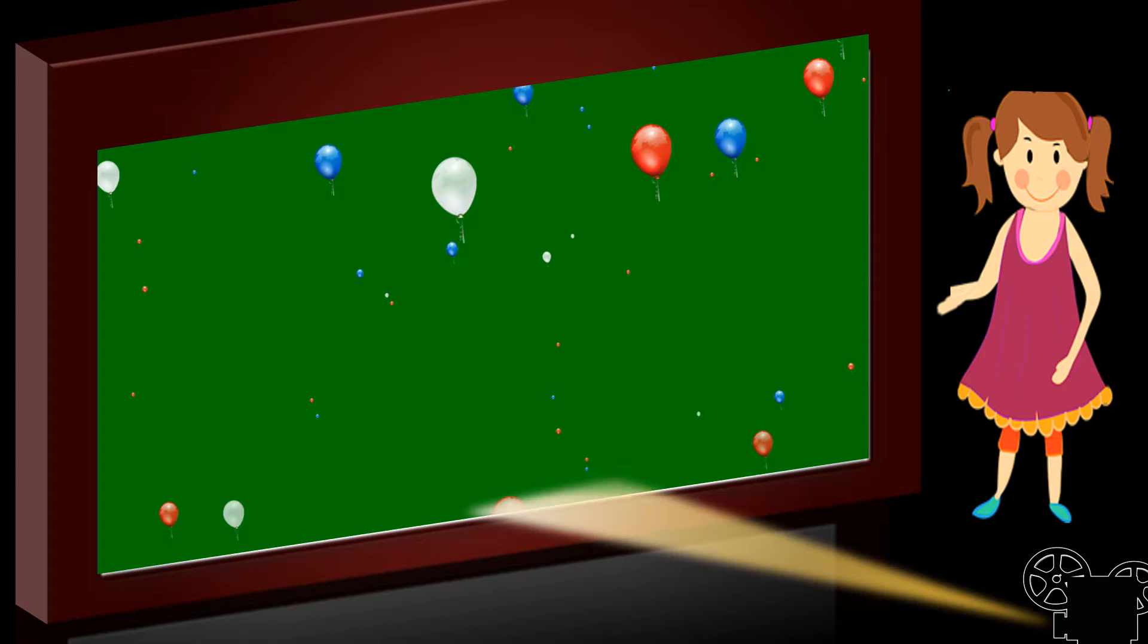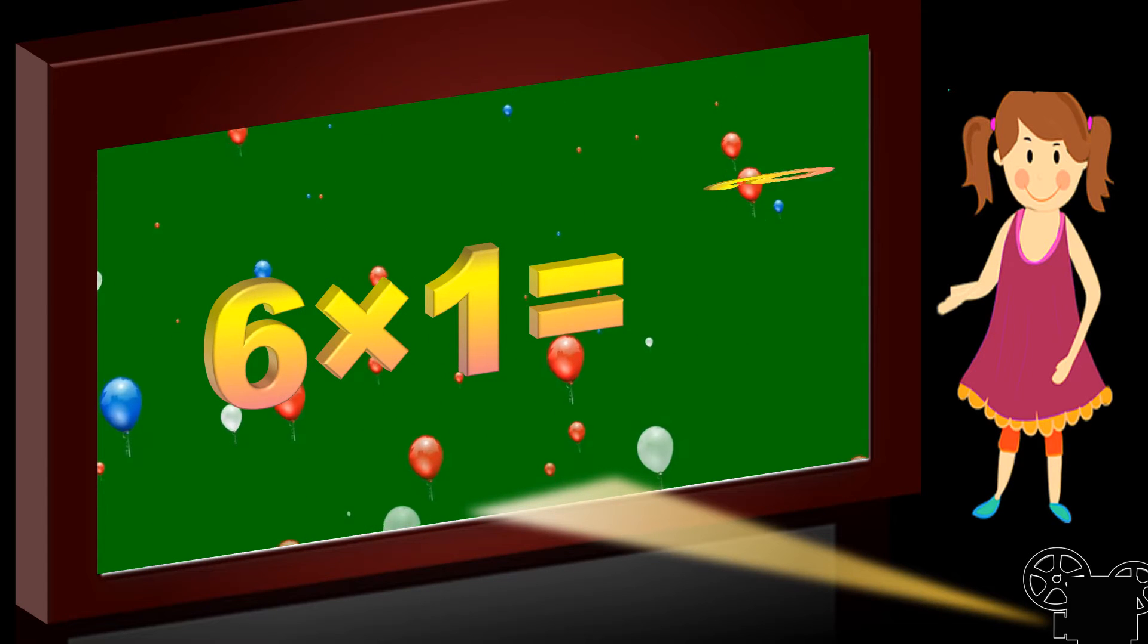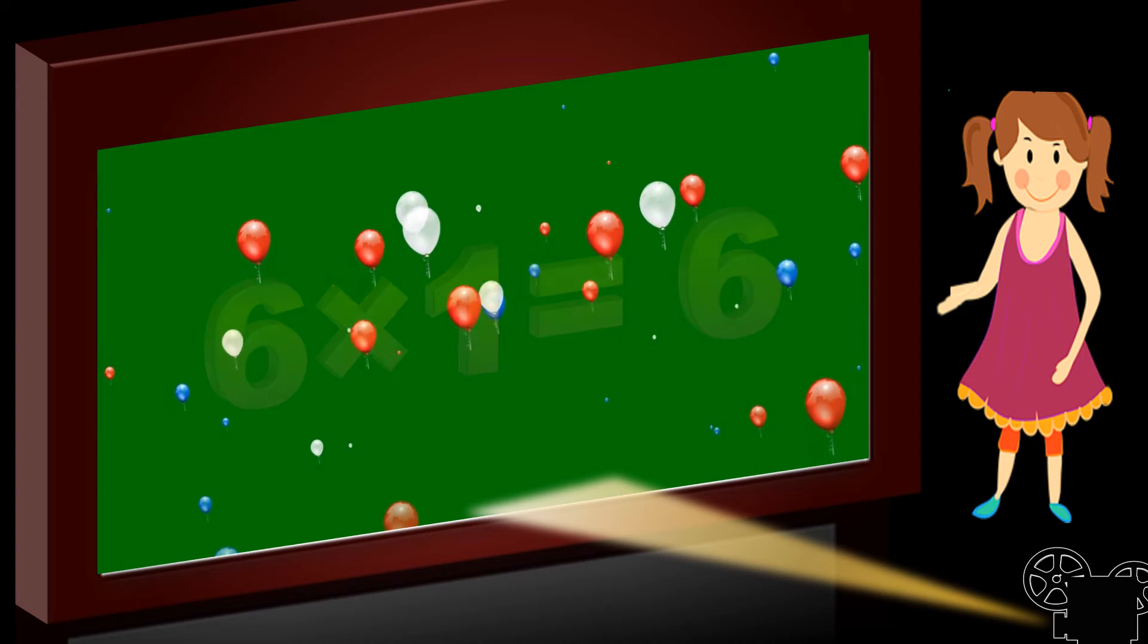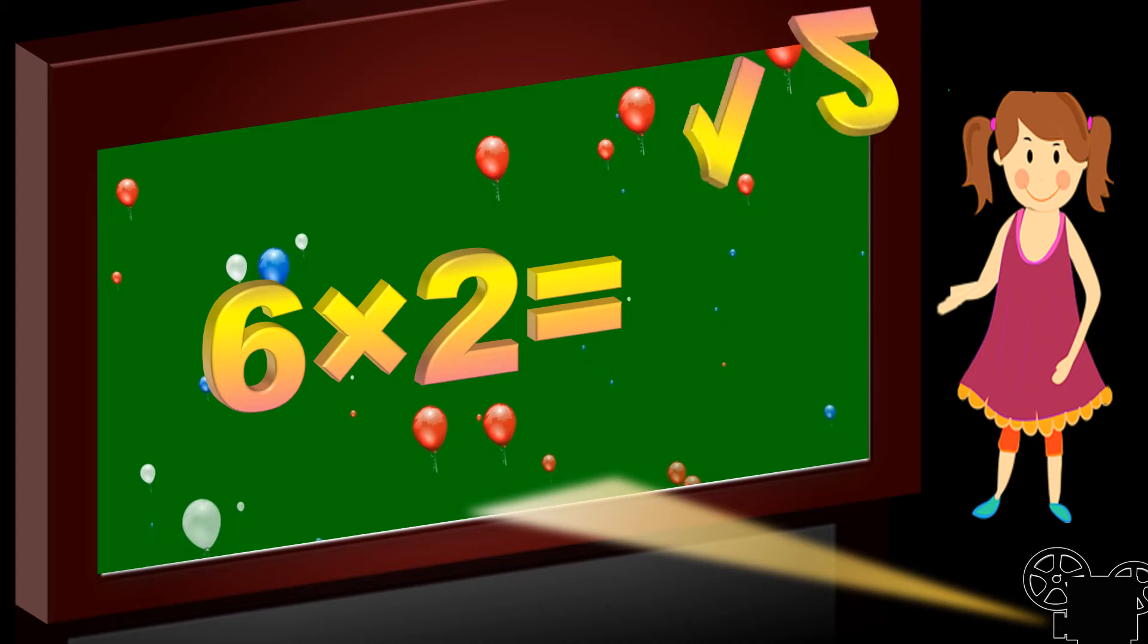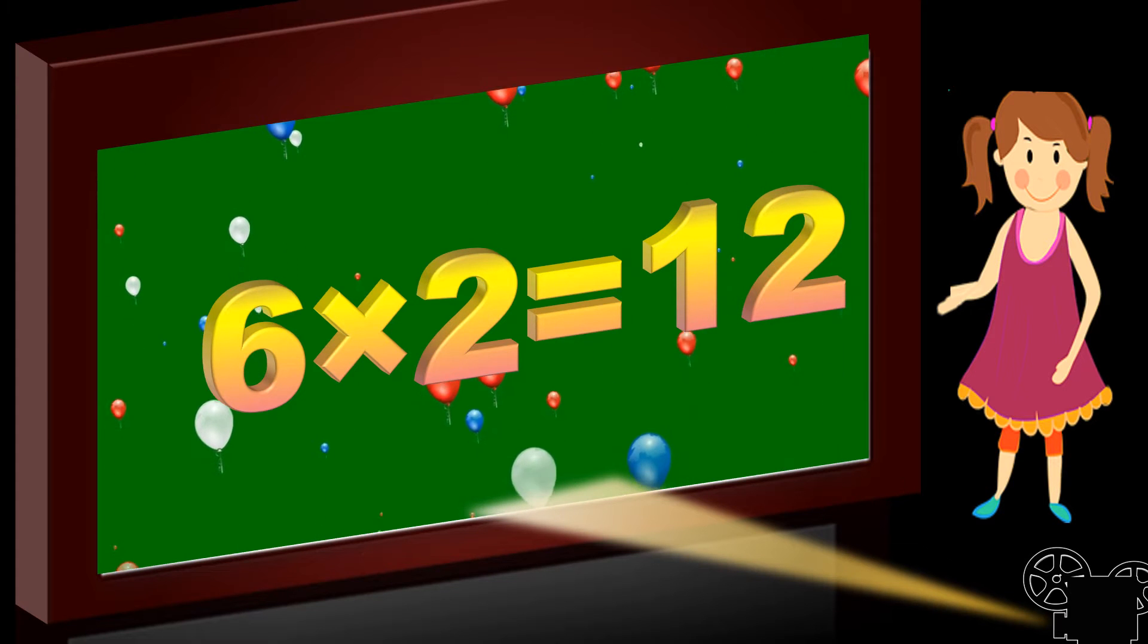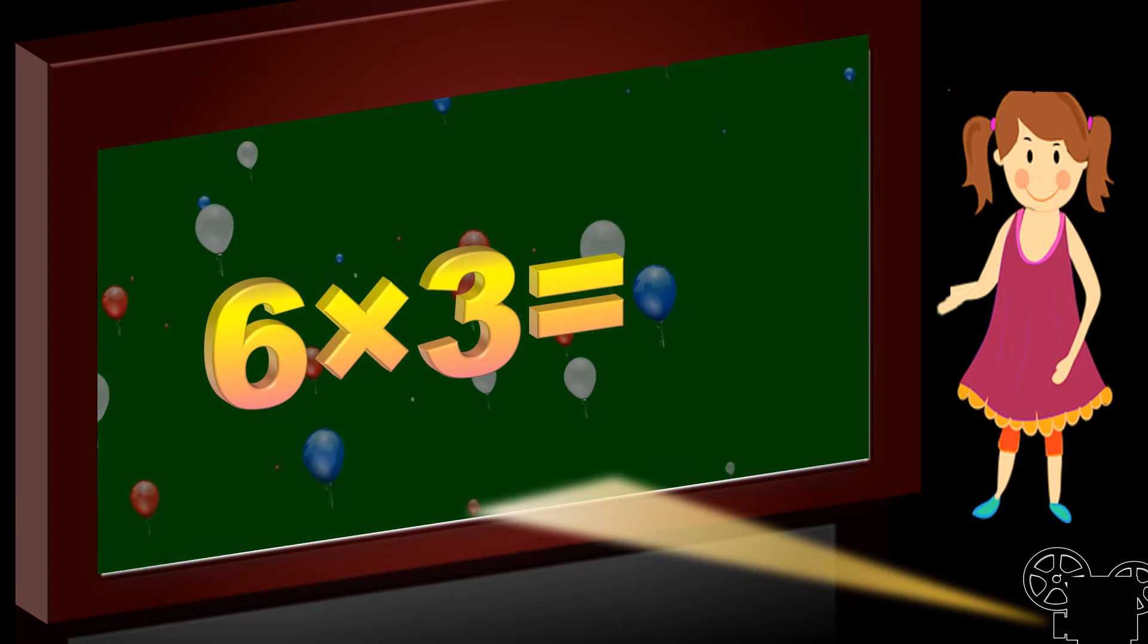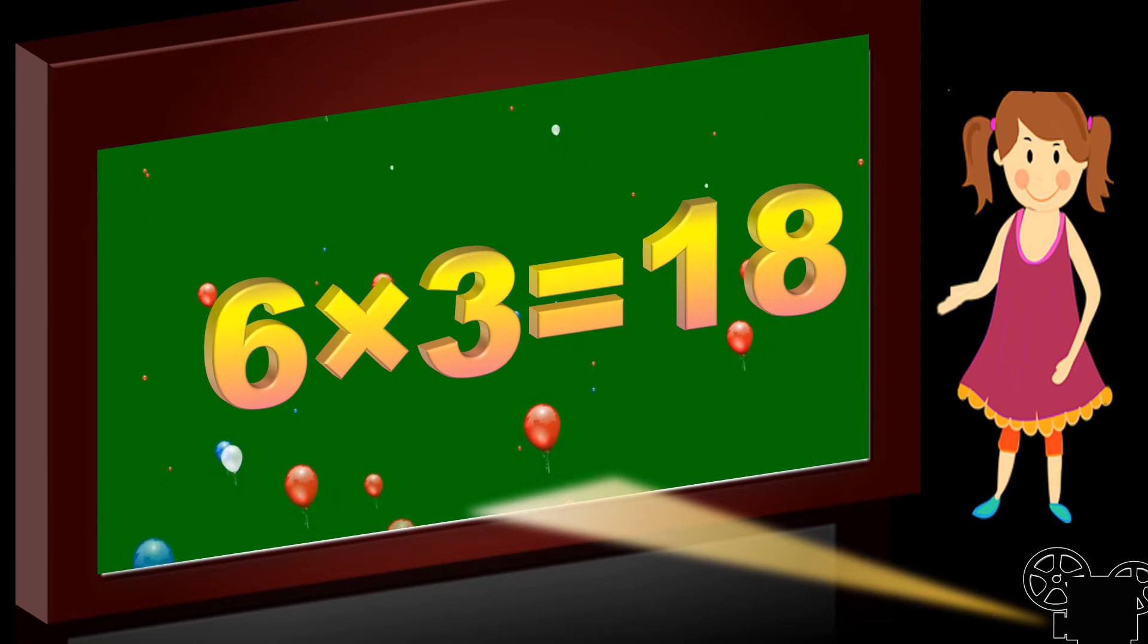So, now let's go for it. 6 ones are 6, 6 ones are 6. 6 twos are 12, 6 twos are 12. 6 threes are 18, 6 threes are 18.